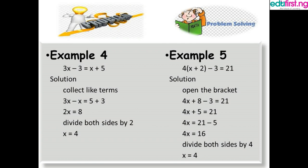We collect like terms. When the x comes to the left side it becomes minus, so 3x minus x equals 5 plus 3, then 2x equals 8. We divide both sides by 2, so x equals 4.